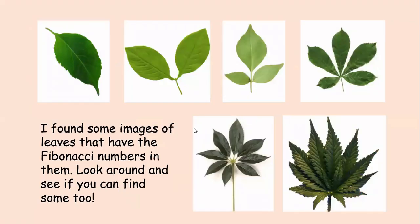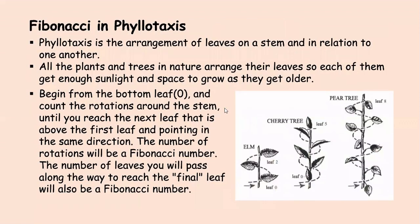I found some images of leaves that have the Fibonacci numbers in them — look around and see if you can find some too, and try to find the pattern. Since we found some leaves, let's talk a little bit about phyllotaxis. Phyllotaxis is the arrangement of leaves on a stem in relation to one another. All plants and trees in nature arrange their leaves so each of them gets enough sunlight and space to grow. Begin from the bottom leaf and count the rotations around the stem until you reach the next leaf above the first that is pointing in the same direction. The number of rotations will be a Fibonacci number, and the number of leaves you pass along the way will also be a Fibonacci number. Here are some examples: an elm, a cherry tree, and a pear tree.